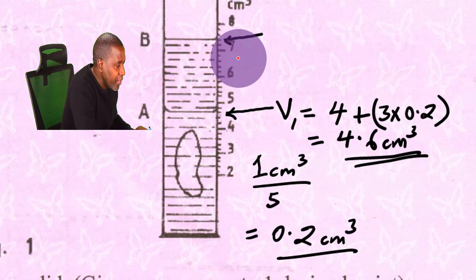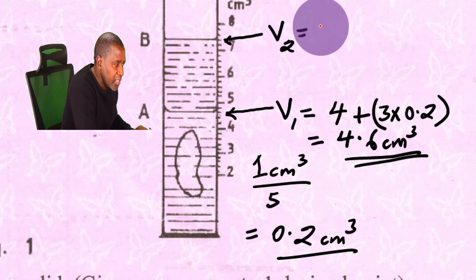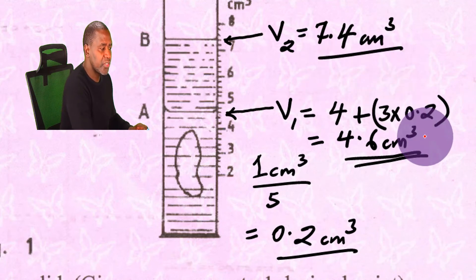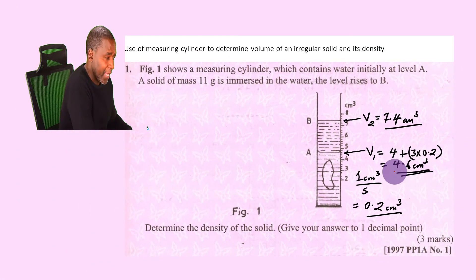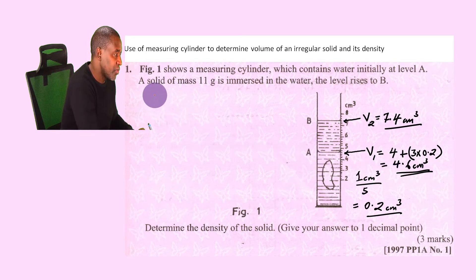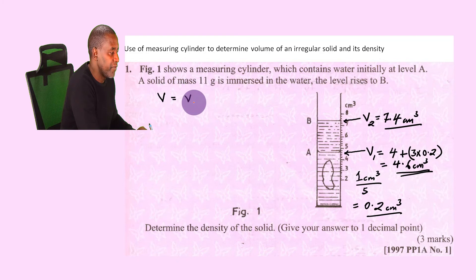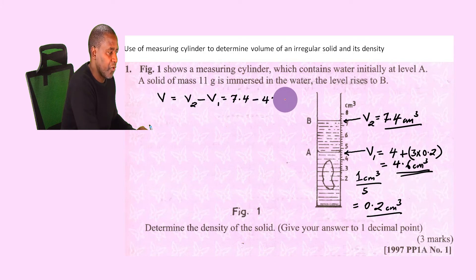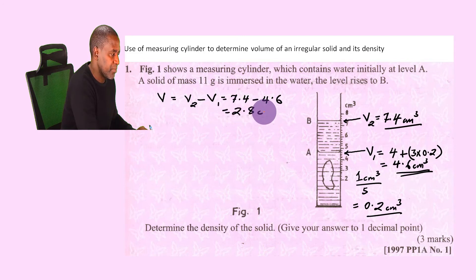Using the same method for the final level: starting from 7, count up in steps of 0.2 — 7.2, 7.4 — so V2 = 7.4 cm³. To get the volume of the water displaced, which equals the volume of the object, calculate V2 minus V1: 7.4 minus 4.6 gives 2.8 cm³.